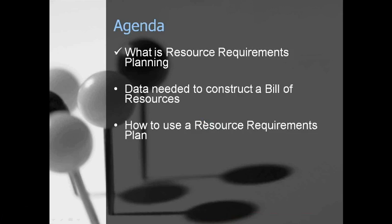Resource requirements planning is used to validate the production plan. The production plan is a document that comes out of sales and operations planning — it says what you're going to be selling by product family over the next several time periods. With that, let's move on to the data that you need to construct the resource bill of material.